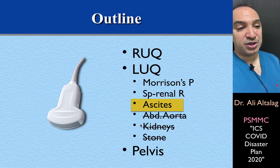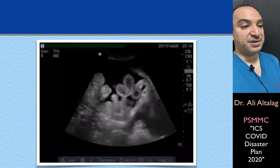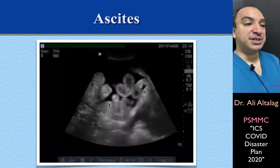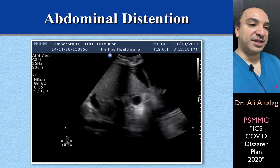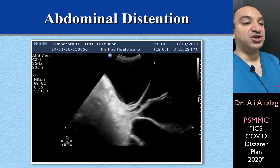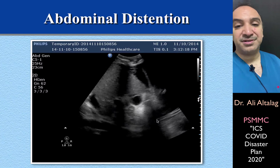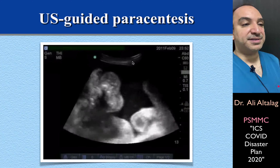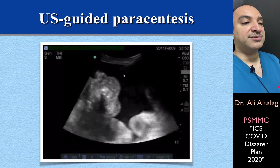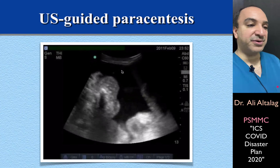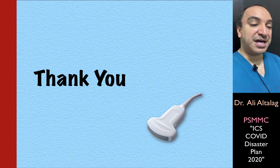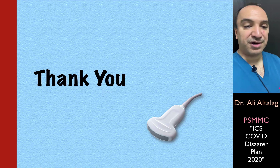The last topic is ascites — you can see bowel loops swimming in a pool of fluid, which is ascitic fluid. There can also be ascites with septations — this is complicated ascites with intense inflammation resulting in multi-loculated ascites. This is how we do ultrasound-guided paracentesis: the needle goes in, then the needle is removed and what remains is the cannula, through which we can drain fluid for either analysis or therapeutic purposes. Thank you very much — I hope this is a useful presentation. I may produce another presentation on echocardiography.